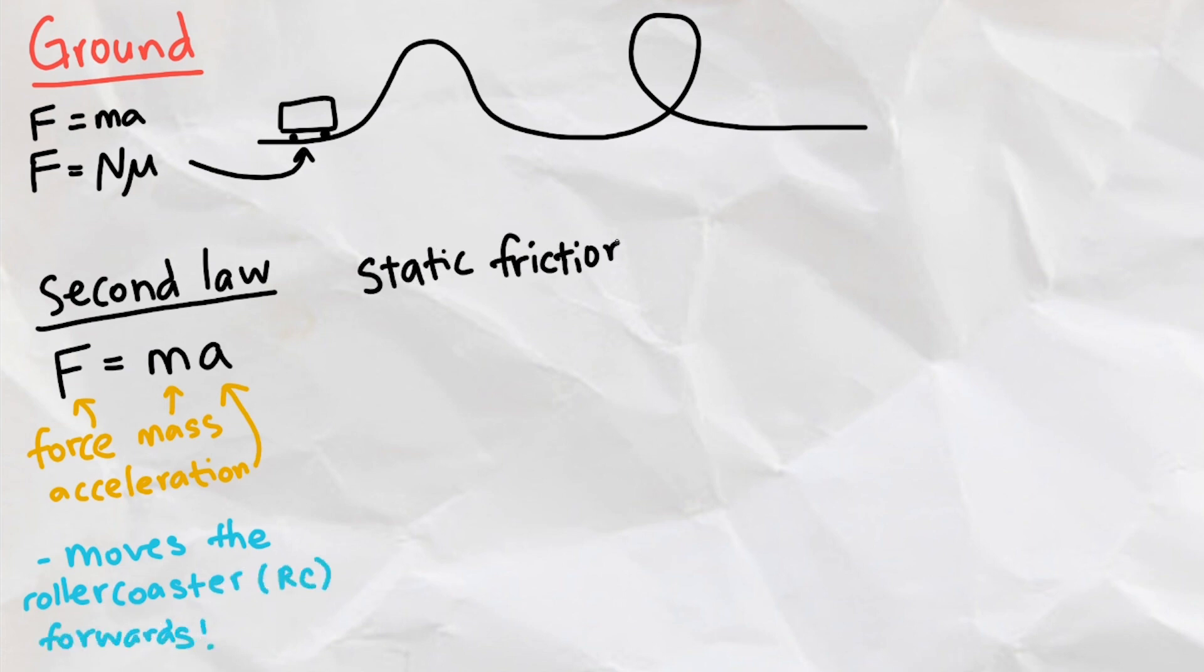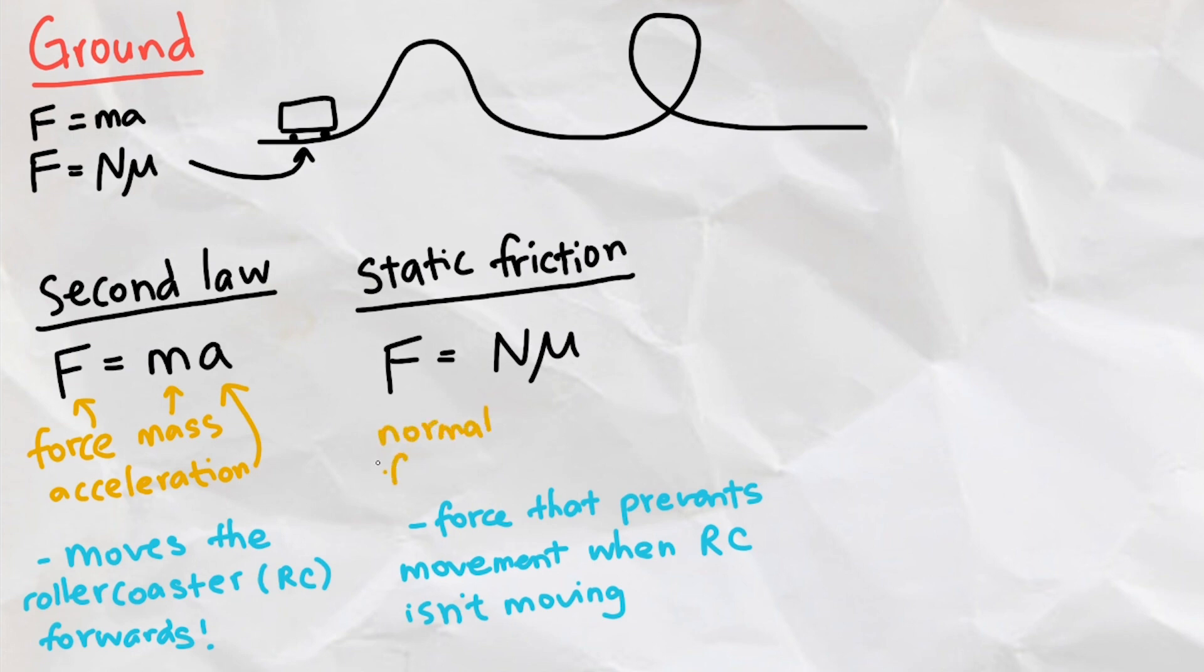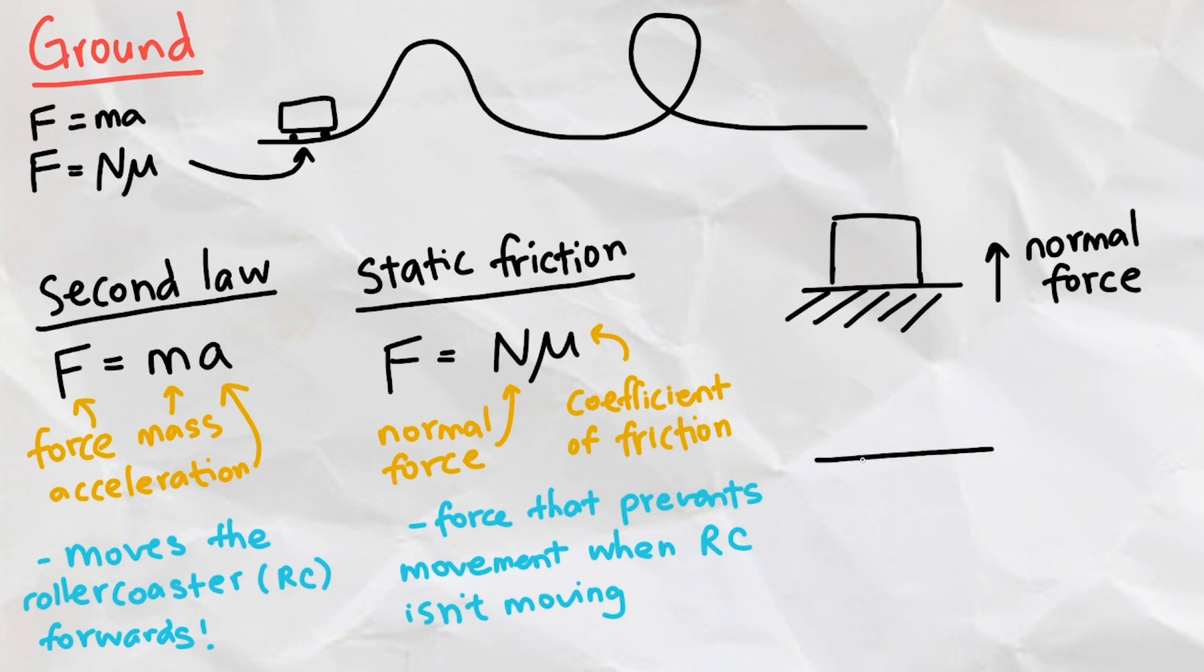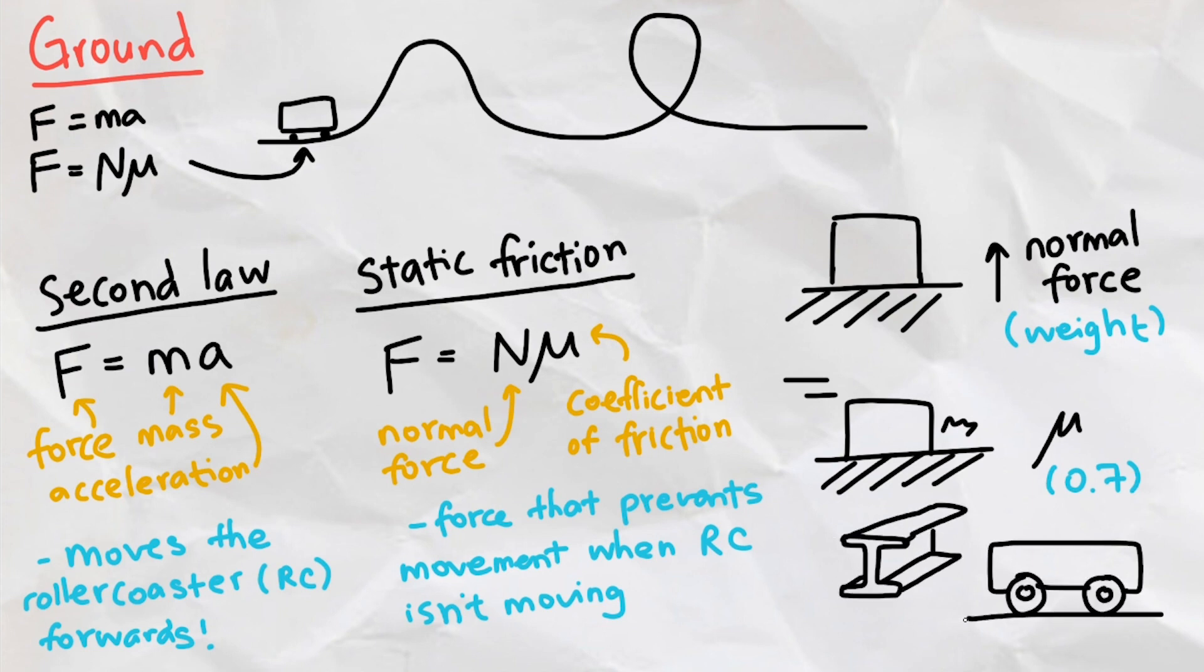It needs to overcome its static friction, which is the force that prevents movement when an object isn't moving. It is given by an object's normal force multiplied by its coefficient of friction, where normal force is the force that prevents solid objects from passing through each other, and the coefficient of friction is a constant dependent on the two objects touching each other. In the case of the roller coaster, its normal force will be just its weight, and its coefficient of friction is 0.7, the constant used for steel-to-steel contact, since that is what the roller coaster and the tracks are usually made of.